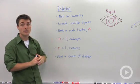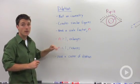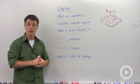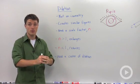When we dilate, we need a scale factor. We'll call that n. If n is greater than 1, then your new image will be larger than the original. If n is less than 1, then your new image will be smaller than your original.